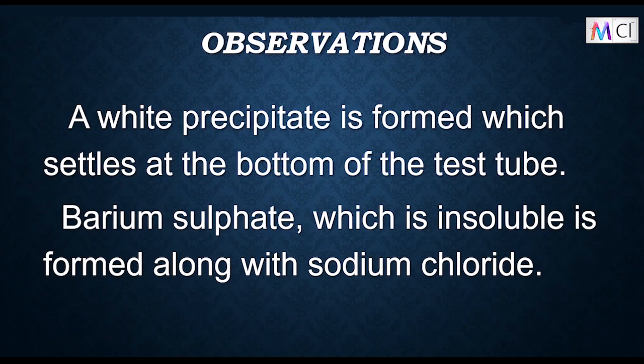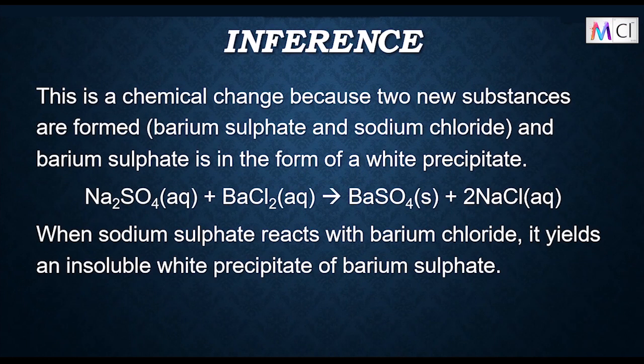Observations: A white precipitate forms and settles at the bottom of the test tube. Barium sulphate, which is insoluble, is formed along with sodium chloride. Inference: This is a chemical change because two new substances are formed — barium sulphate and sodium chloride. Sodium sulphate + barium chloride → barium sulphate + sodium chloride. Barium sulphate is formed as an insoluble white precipitate.